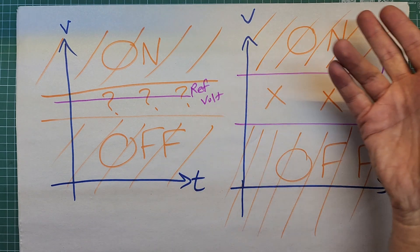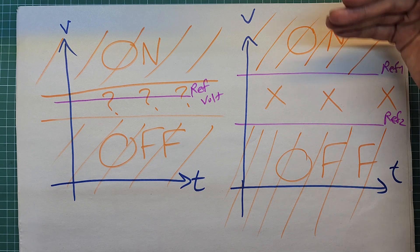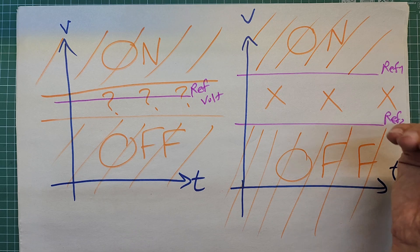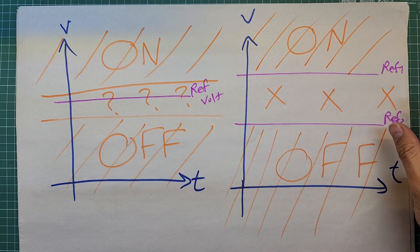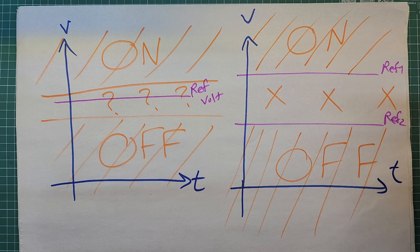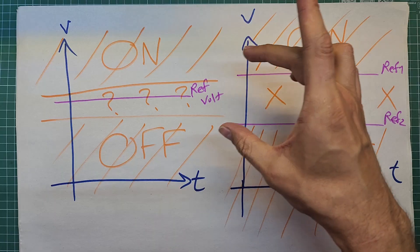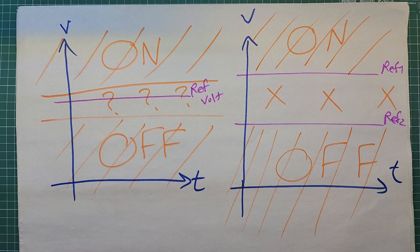But in a Schmitt Trigger system like this, the output will be activated once the sensor voltage gets higher than the first threshold, and the output will be turned off once the sensor voltage gets lower than the second threshold. So in the area I marked as X, the state of the relay depends on its previous state — if it is coming from the 'on' area, it will remain on in the X area; and if it is coming from the 'off' area, it will remain off. This is the Schmitt Trigger technique, which makes the output more stable and prevents environmental noise from affecting the output.